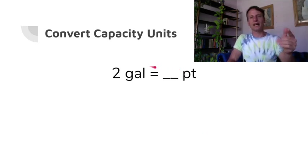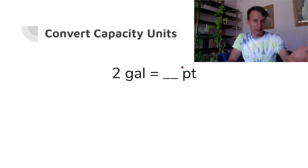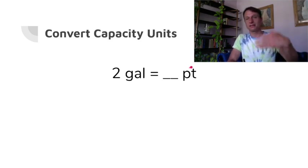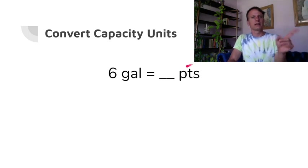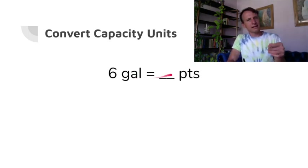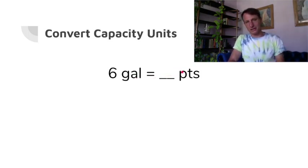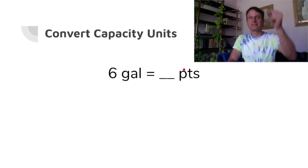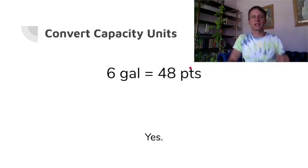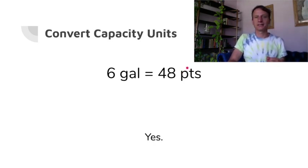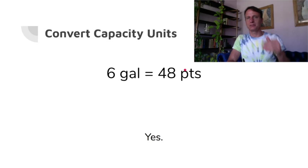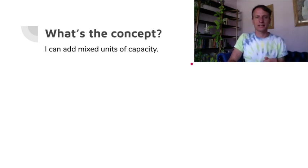Two gallons: if there are eight pints in a gallon, two times eight is sixteen. Six gallons: six times eight is 48 pints, because there are eight pints in a gallon.